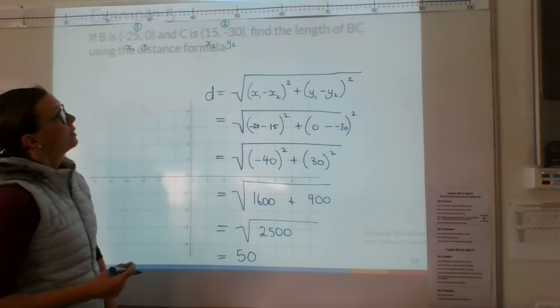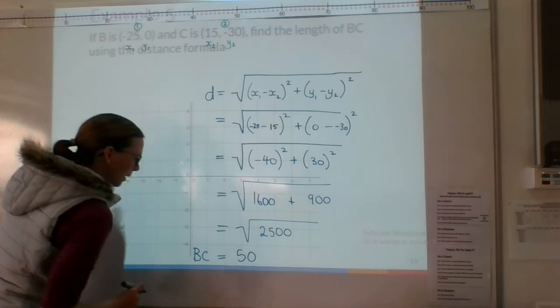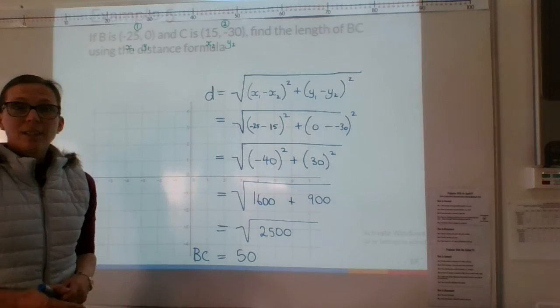So the distance or the length of BC. So BC is equal to 50. And that's using the distance formula.